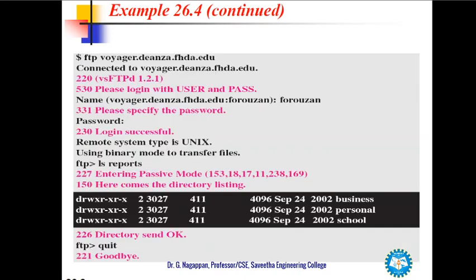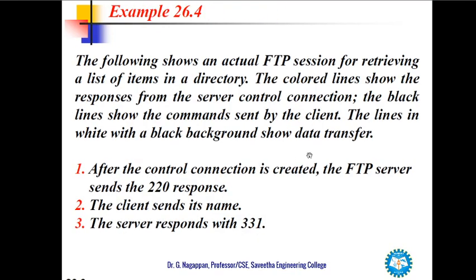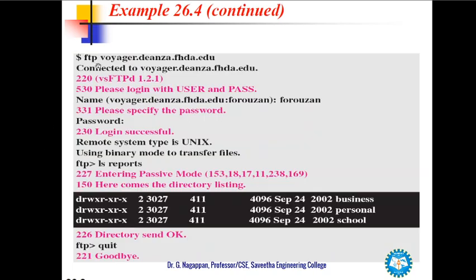We are going to see this FTP session. The colored lines show the responses from the server on the control connection, and the black lines show the commands sent by the client. Lines with a white-on-black background show data. After the control connection is created, the FTP server sends a 220 response indicating it is ready, and when the connection is established we get 220 followed by 530.